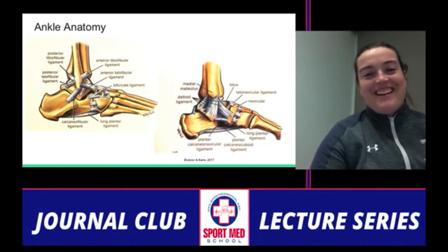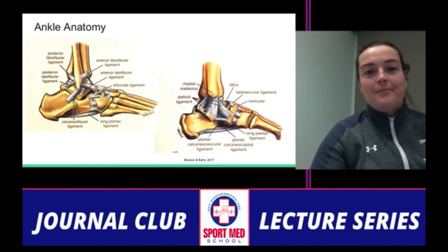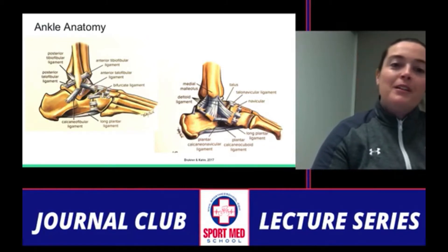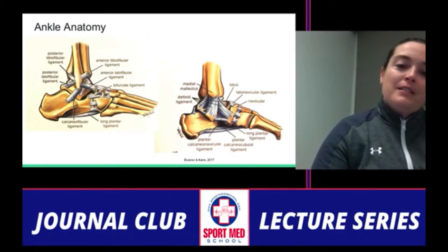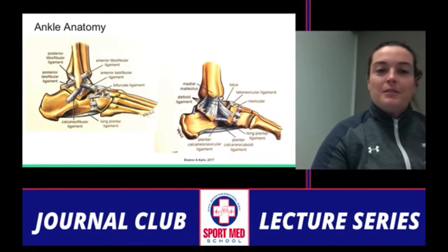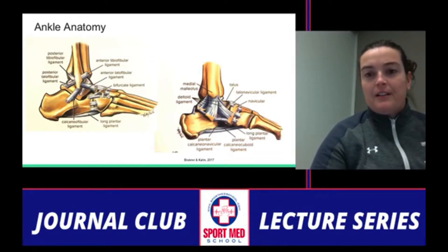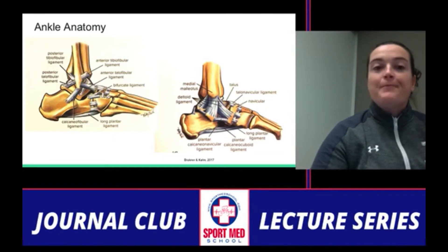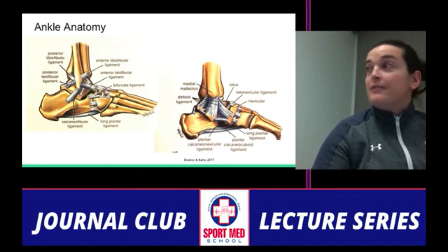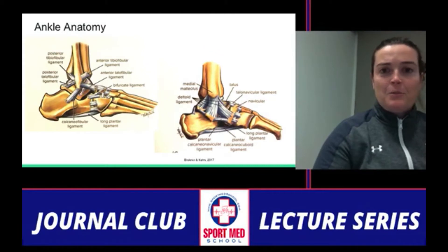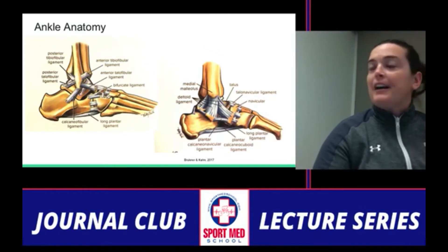Looking at the ligaments of the ankle from medial and lateral views: the ATFL is our usual culprit, and we also look out for the calcaneofibular ligament. The deltoid is a fan-shaped ligament on the medial side. The AITFL is indicated in a higher ankle sprain.